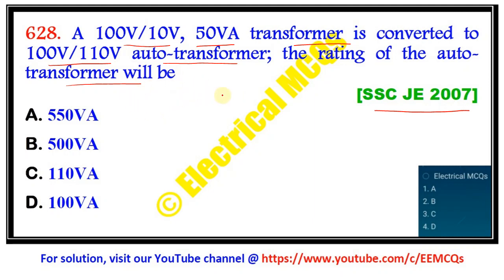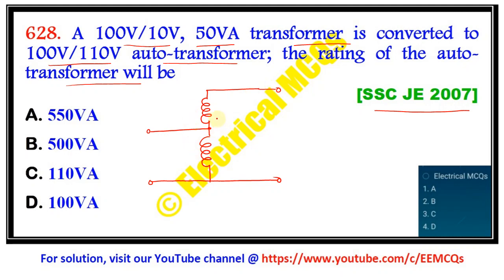Basically a two-winding transformer has been converted to a step-up auto transformer. The situation can be drawn like this. These are the two windings connected to give us the auto transformer, meaning there is magnetic coupling as well as direct connection. Let us label the points A, B, and C. This winding gives 10 volts and the winding where the input is given is basically your 100 volts.